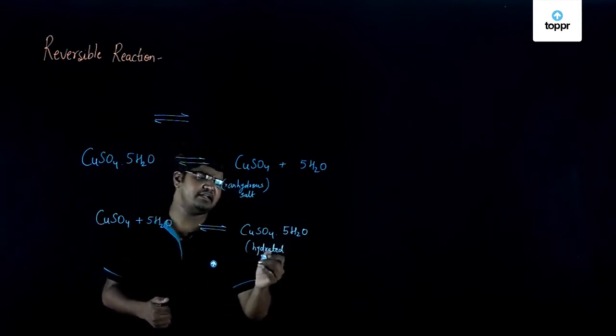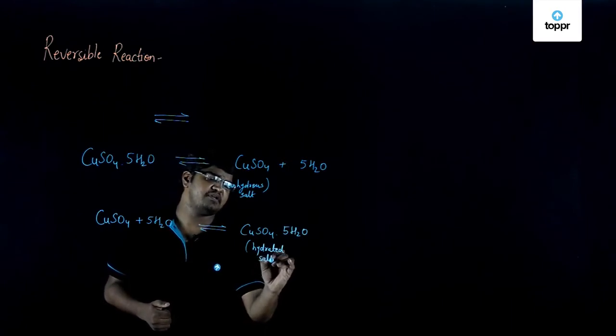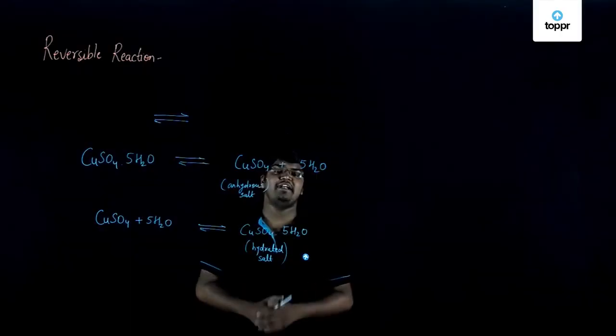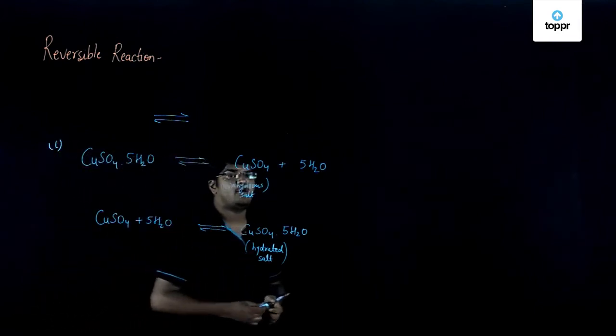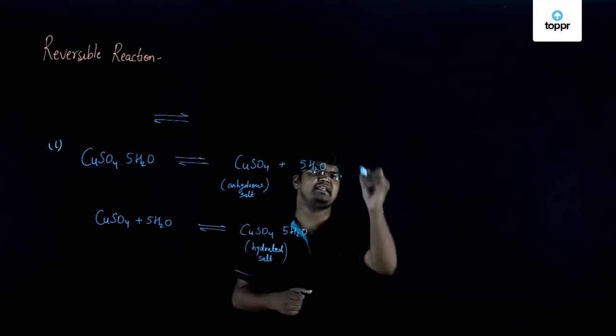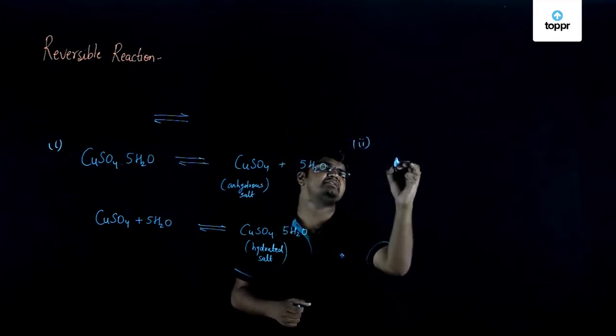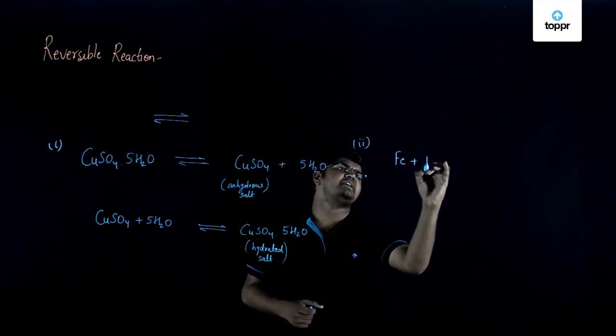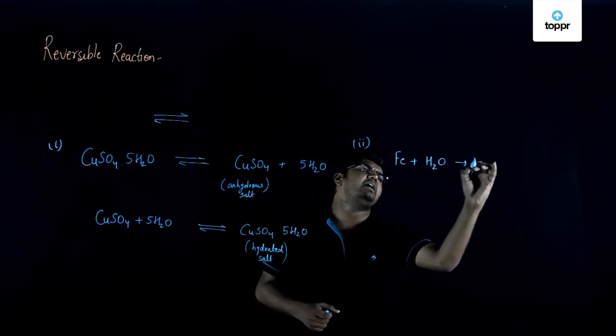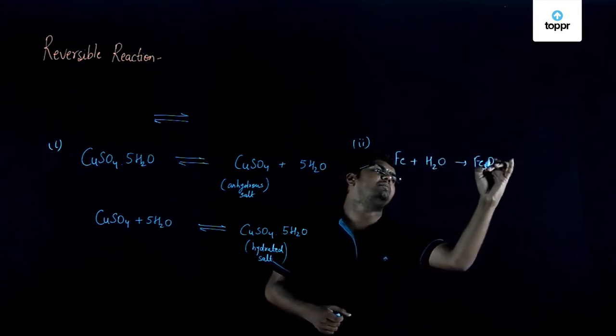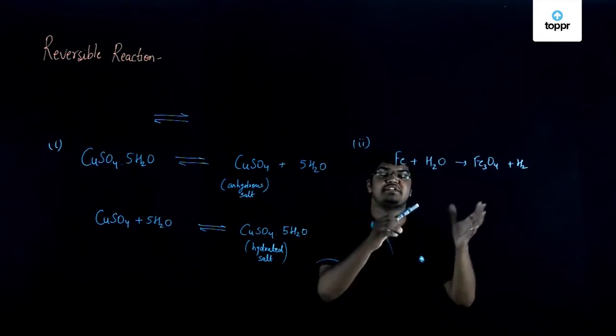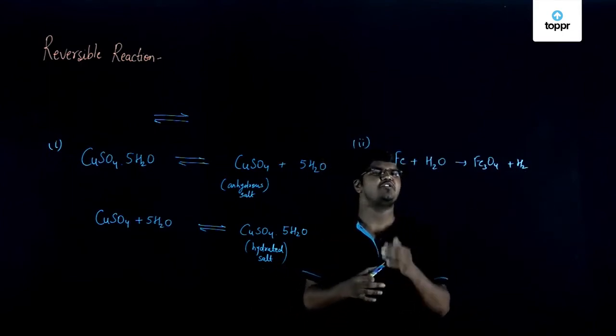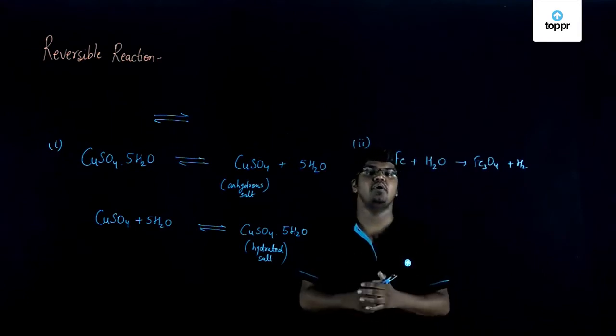Can you tell me another reaction which is a form of reversible reaction? Well, whenever we pass steam over red-hot iron, it becomes magnetic oxide. This means the reaction can be given as Fe + H2O giving Fe3O4 + H2. You can definitely balance this using stoichiometry. I'm going to leave that up to you.